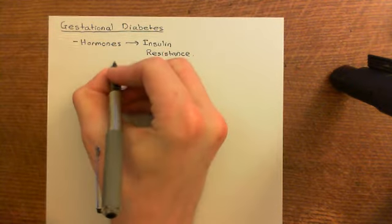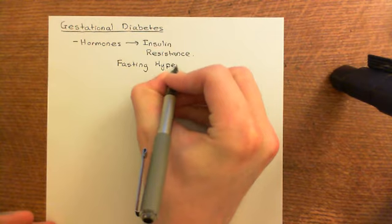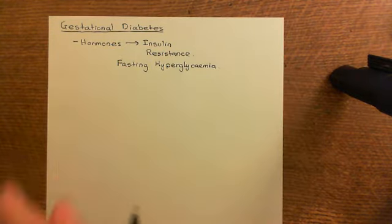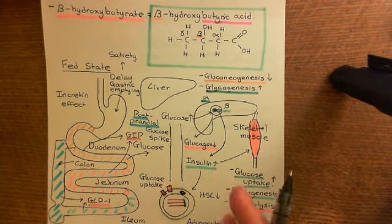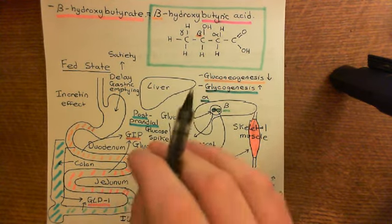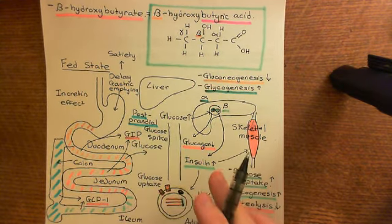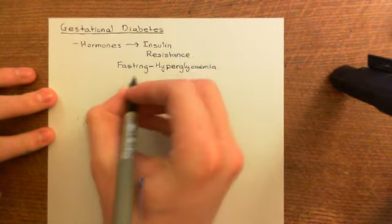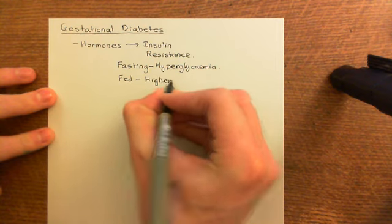In the fed state, gestational diabetes reduces the effect of insulin on the liver, skeletal muscle, and adipocytes, so postprandial glucose spikes are both higher and broader. As glucose comes in it isn't removed as fast, reaching higher levels, and it takes much longer to clear because tissues are less responsive to insulin.